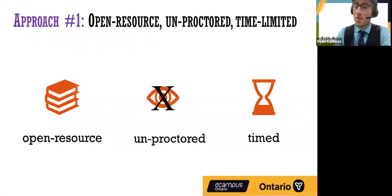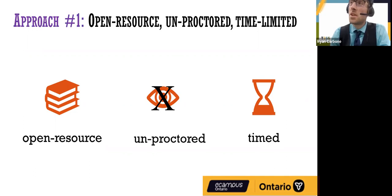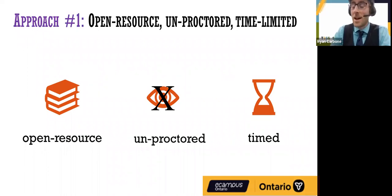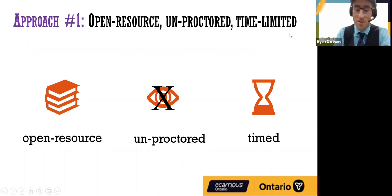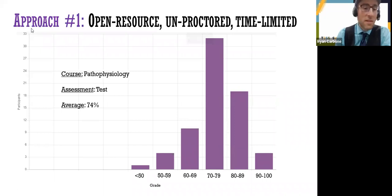We'd now like to show you some data collected from assessments graded over the last few years. We're presenting two different approaches today. Approach number one focuses on assessments that are open resource, unproctored, and time limited. I often get asked why I started using open resource assessments when we switched to virtual teaching. Honestly, I thought that whether I liked it or not, my tests were going to be open book — so if I can't beat them, I might as well join them. Here is the grade distribution for a pathophysiology test: open resource, unproctored, time limited. The class average was a respectable 74%.